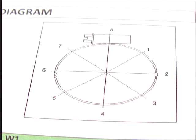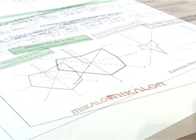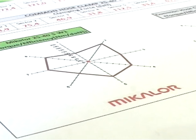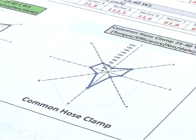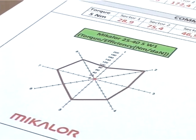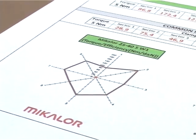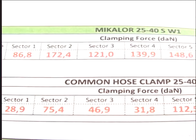If you look at the left hand diagram which corresponds to the Mikalor clamp, not only are the values far higher than those of the standard clamp, but the polar diagram is much more circular, meaning that the Mikalor clamp distributes pressure more evenly around the circumference of the band.